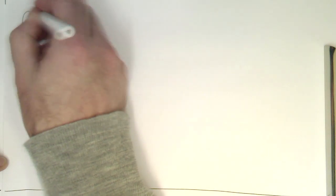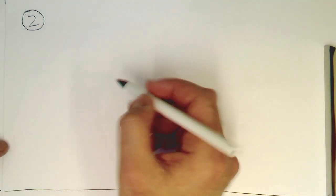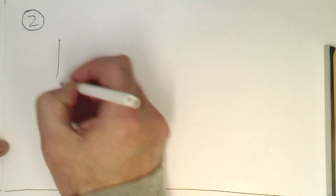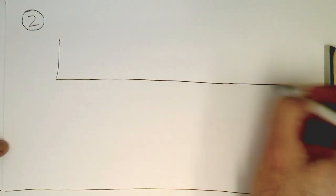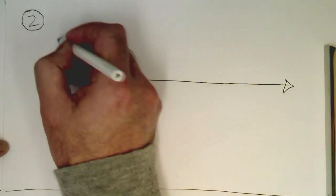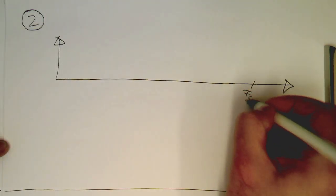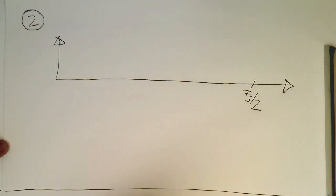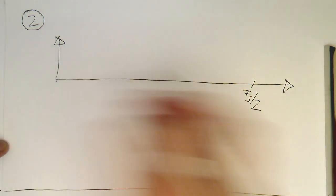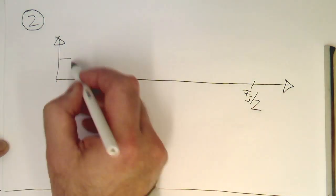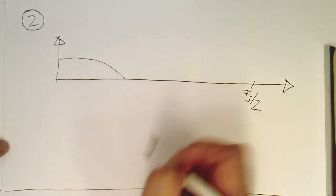Option two is not so intuitive, but it's done now very often. So imagine we place our fs half here, and now the spectrum of our signal does this here.